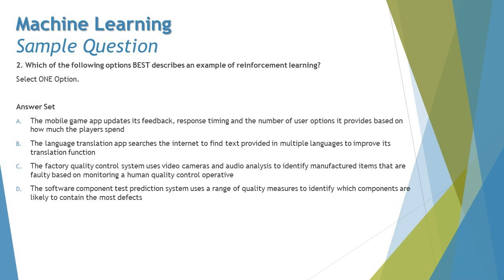Option A says: a mobile game app updates its feedback response timing and the number of user options it provides based on how much the player spends. This looks absolutely correct because reinforcement learning is all about capturing real-time data and adjusting system behavior accordingly. The amount spent can be considered the reward function, and the system changing its behavior to increase spending fits reinforcement learning well. However, let's cross-check with the remaining options.